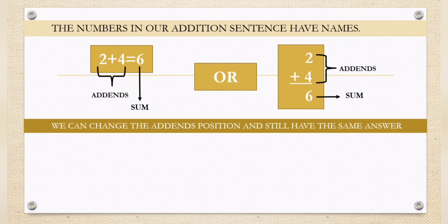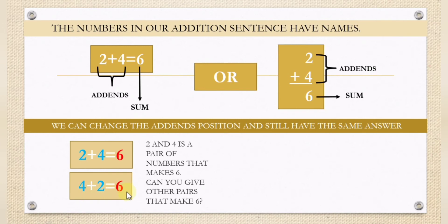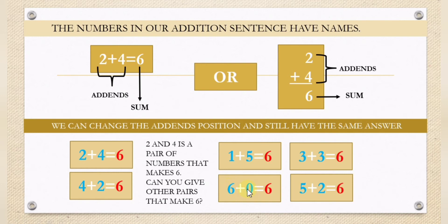We can change the addends position and still have the same answer. 2 plus 4 equals 6; if we interchange the position of 2 and 4, still the result is 6. 2 and 4 is a pair of numbers that makes 6. Can you give other pairs that make 6? Here are other pairs that result in 6: 1 plus 5 equals 6, 3 plus 3 equals 6, 5 plus 2 equals 6, and 6 plus 0 equals 6.